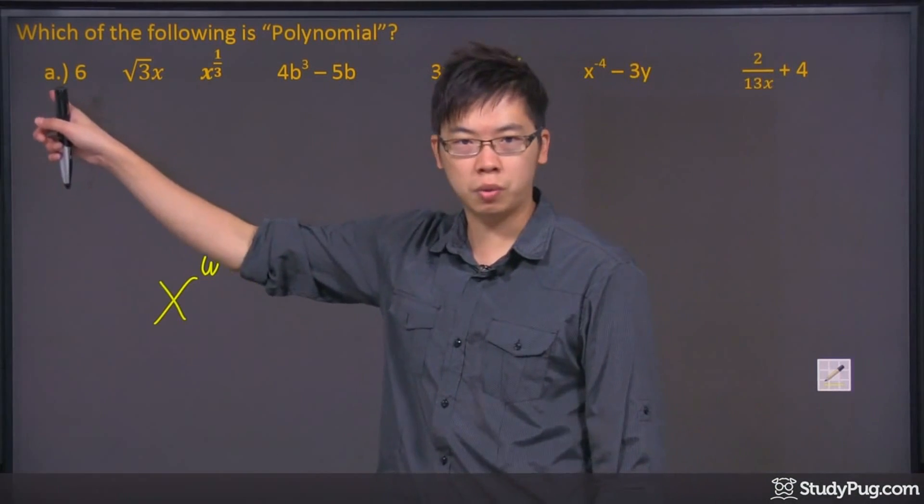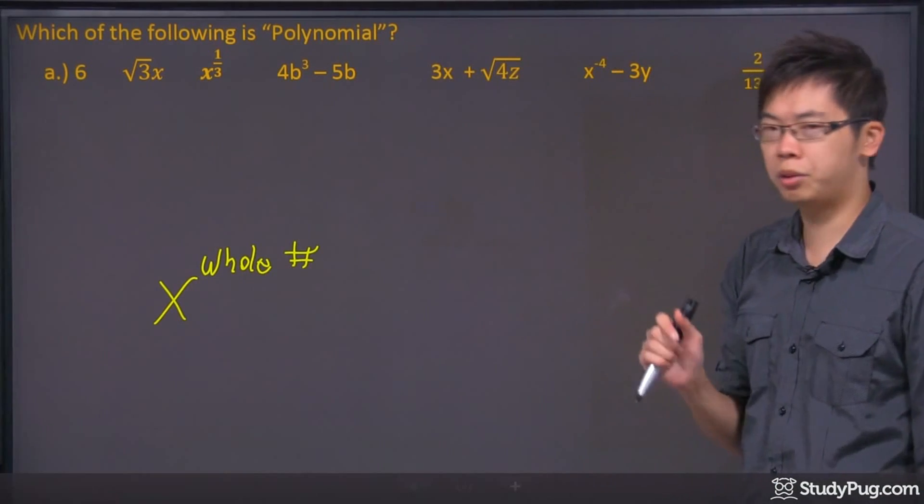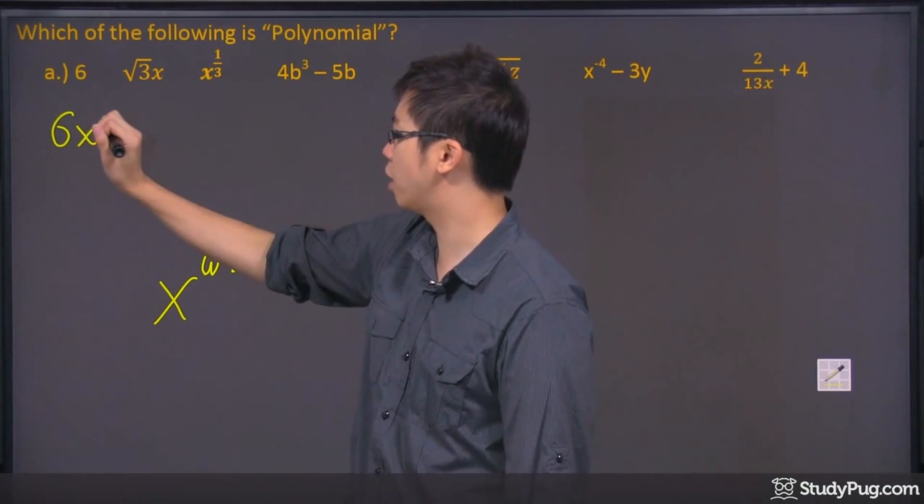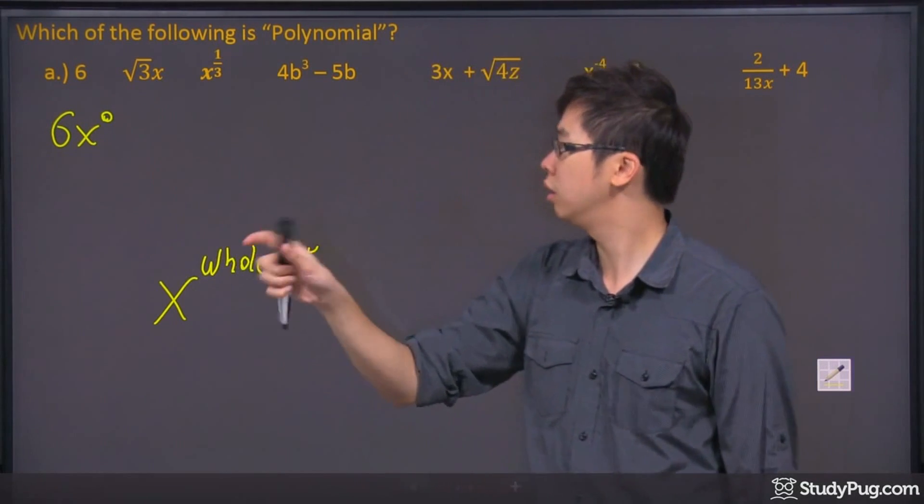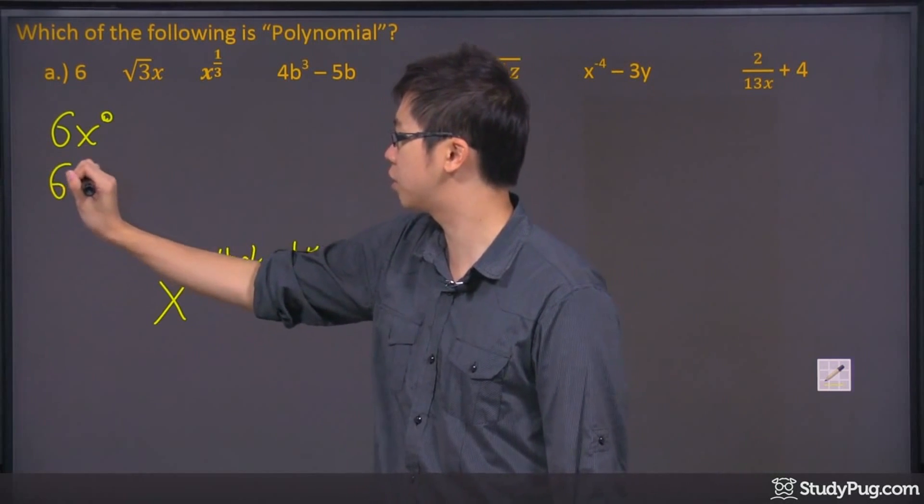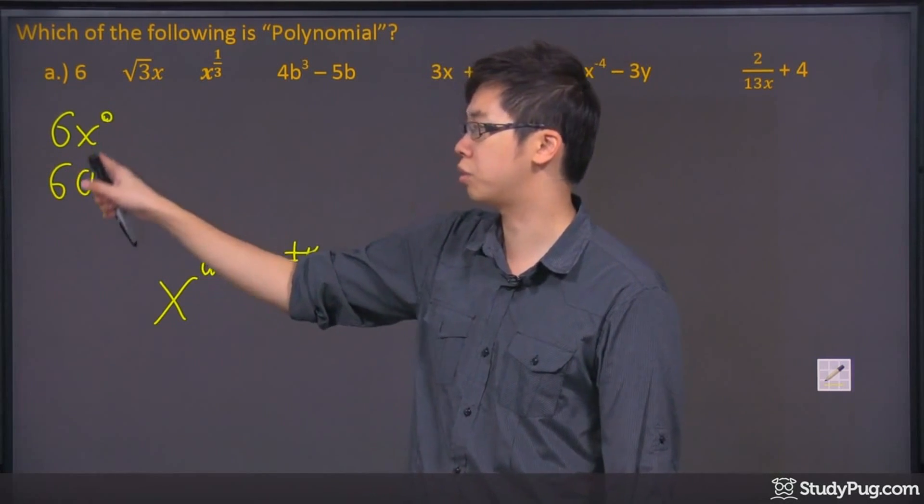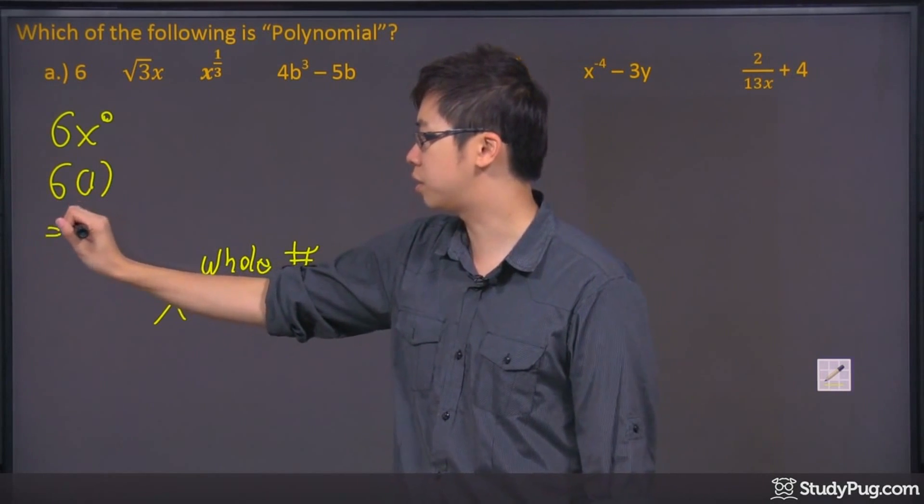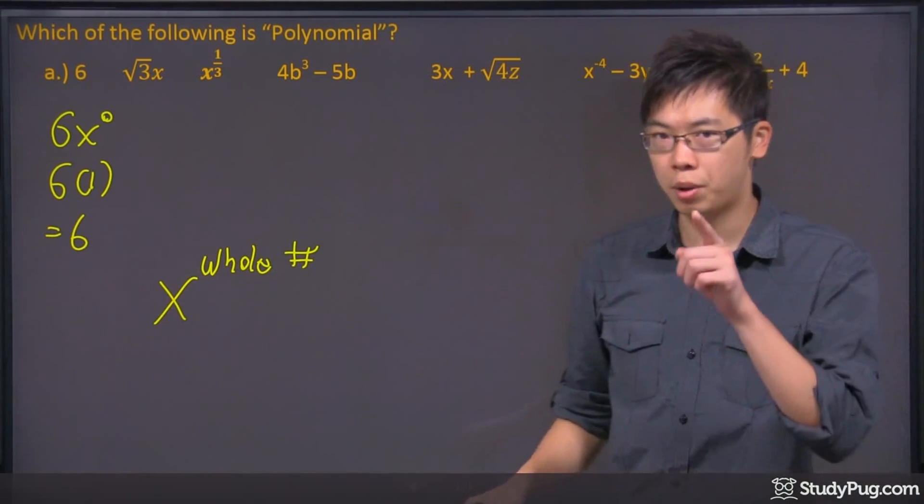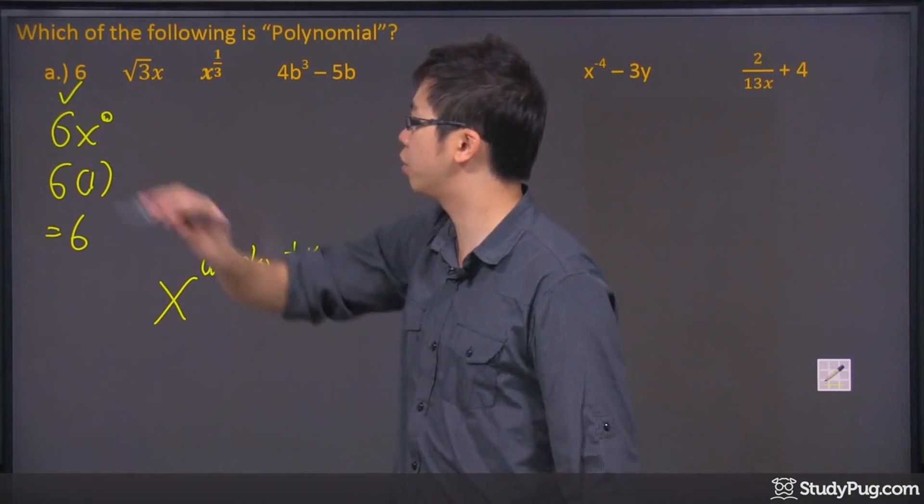So let's take a look at the first one, 6. Is 6 a polynomial? It actually is, because what happened is if you just pretend there's an x power 0, and 0 is a whole number. So that's equivalent as 6 times 1, because anything to the power of 0 is a 1, so it is still 6. So any constant number is considered as a polynomial. So that was a little check mark right there.